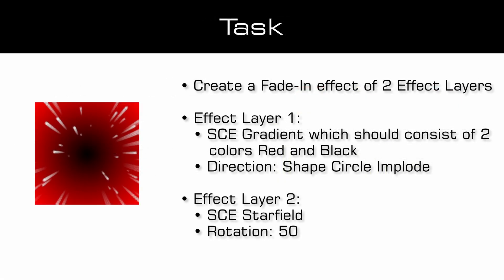In the task we will work with two different effect layers. Effect layer 1 should consist of the SCE gradient with two colors, red and black, and the direction shape circle implode. Effect layer 2 should consist of the SCE star field with a rotation of 50. All other effect parameters we leave as default.